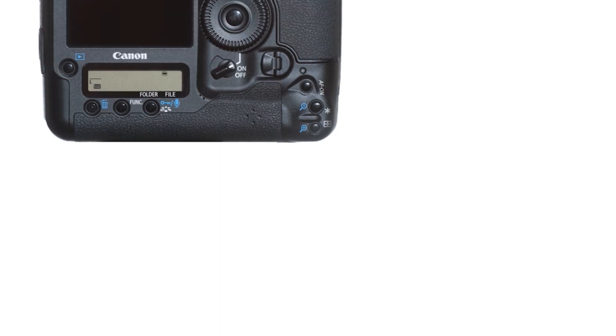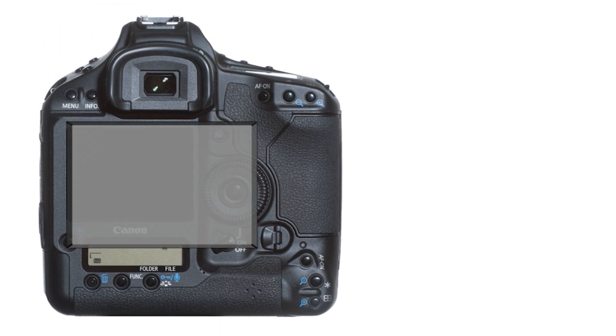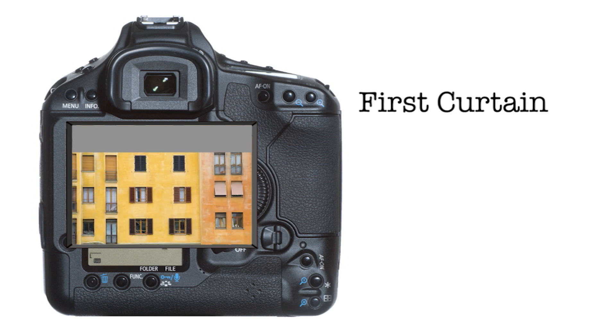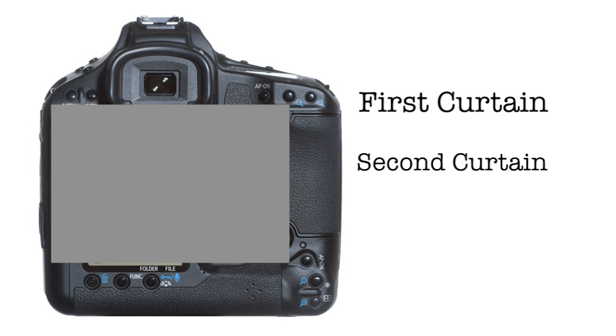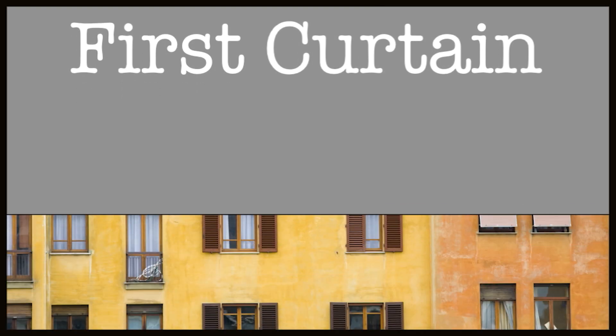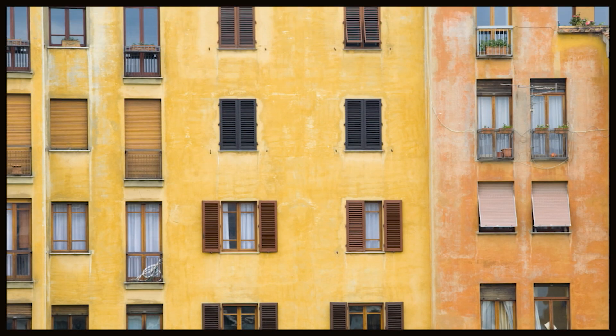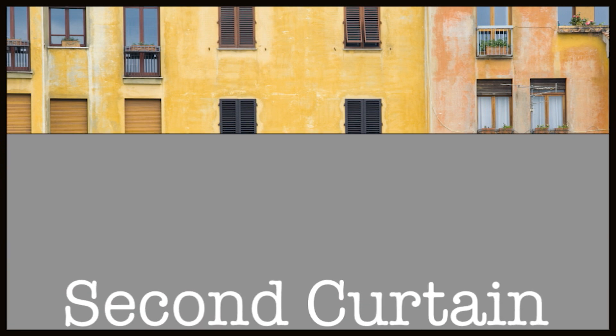It's important to understand how your camera's shutter works. Your camera's shutter has two curtains, and these curtains have names: the first curtain and the second curtain. They open and close to reveal light to the sensor, much like a curtain opens and closes in a theater to reveal what's happening on the stage. When you press the shutter release, the first curtain opens to reveal the light to the camera's sensor, then the second curtain follows behind to hide the light, and the curtains reset and wait for you to press the shutter release again.